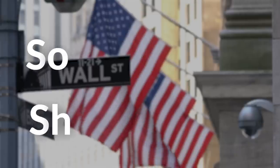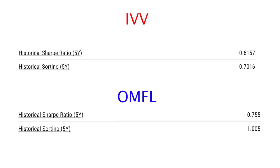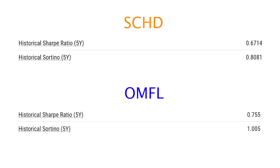Now let's focus on those ratios mentioned at the beginning of the video — the Sharpe Ratio and the Sortino Ratio. This chart shows the Sharpe Ratio and the Sortino Ratio of OMFL compared to IVV, which is an ETF that tracks the S&P 500, over the last five years. Just as a reminder, the higher the Sortino Ratio means that the fund is compensating investors better for the level of downside risk it is taking. Comparing the historical five-year Sharpe Ratio and Sortino Ratio with SCHD side-by-side, you can see that OMFL takes the win again with a significantly higher Sortino Ratio and Sharpe Ratio.